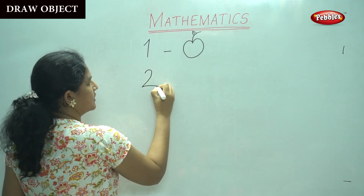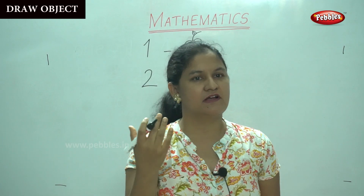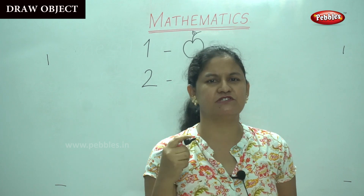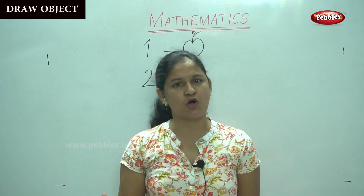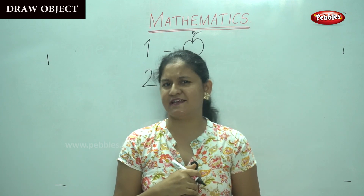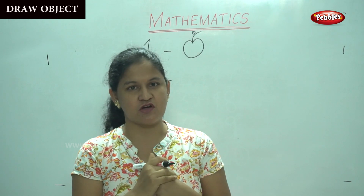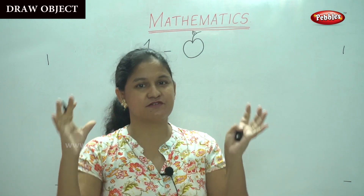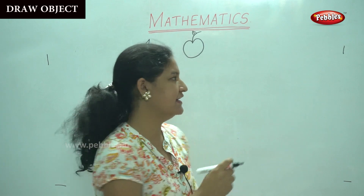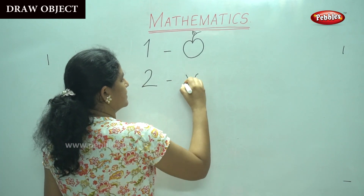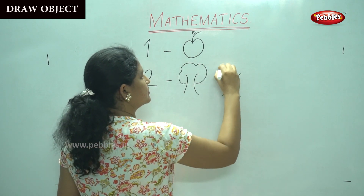For number 2, can anyone tell me how many objects you will draw for number 2? Correct, it is 2 objects. You can draw any objects that you like. Some of us like to draw a ball, some of us like to draw an ice cream. So, I'm going to draw 2 trees. Shall we draw 2 trees? 1 tree, 2 trees.